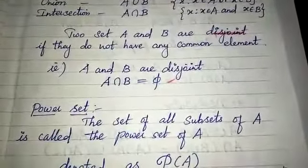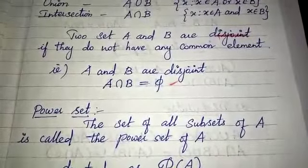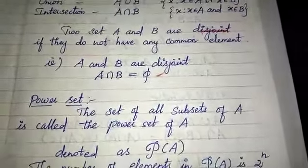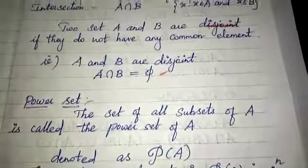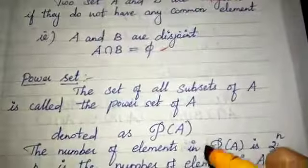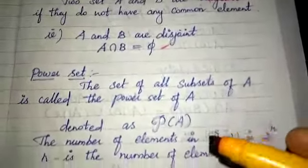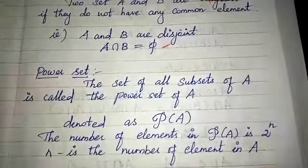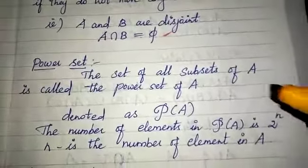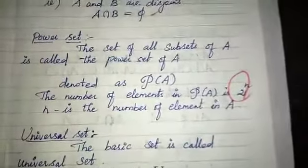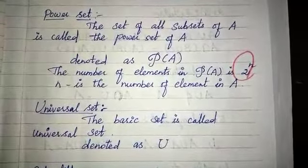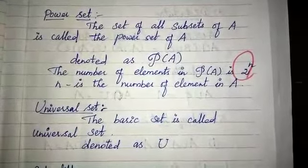The null set means empty set. Power set: the set of all subsets of A is called the power set. The power set has 2 to the power N elements, where N is the number of elements in A. The basic set is called the Universal set, denoted by U.